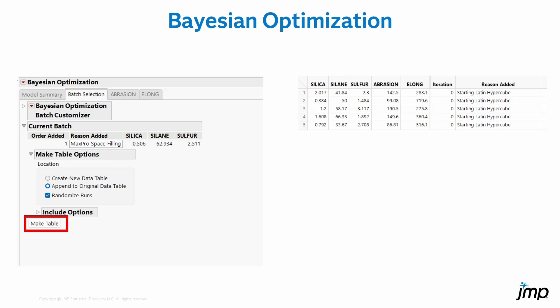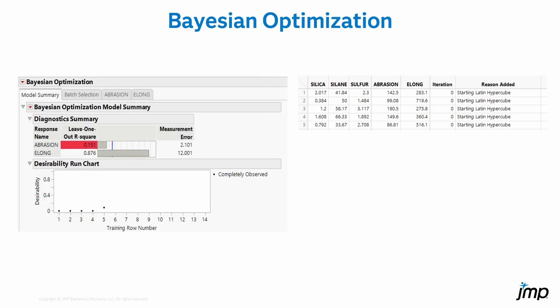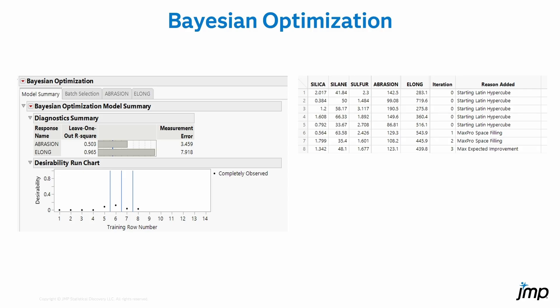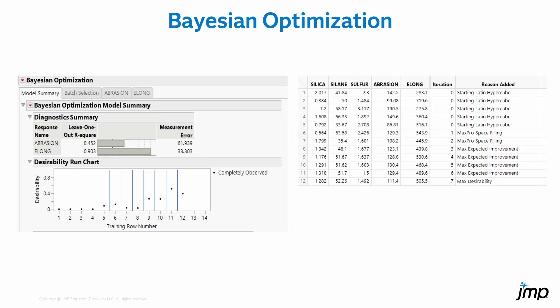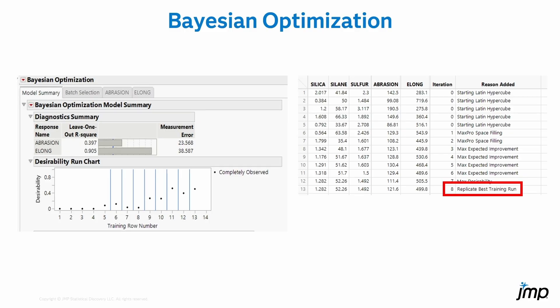We can save the recommended run and proceed. When we get the response to that new run, we find that it improves model fit and also has superior response values. I'll quickly go through the next few iterations, but as we go, watch the run chart that tracks our progress. The platform starts replicating at the 13th run, indicating that we have solved the optimization problem in seven fewer runs than the original data set. This is very promising.